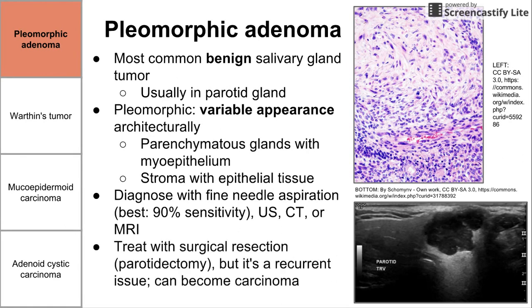You treat pleomorphic adenoma with surgical resection. It's called a parotidectomy if it's done to the parotid gland, but this is a recurrent issue. When you remove pleomorphic adenoma, the boundaries of the tumor aren't always well-defined, so it tends to recur.